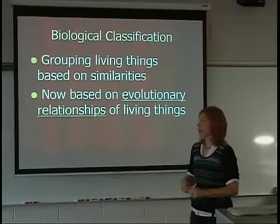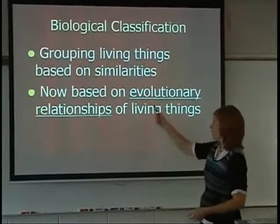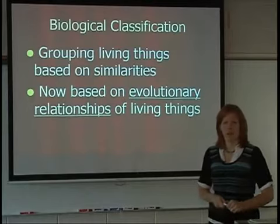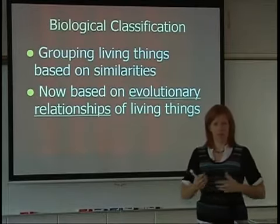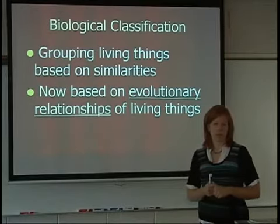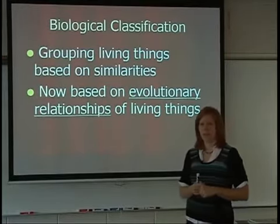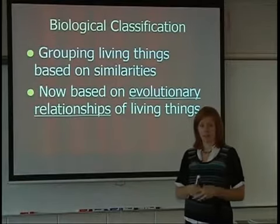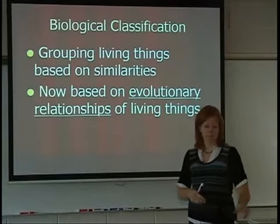The modern way that things are classified is based on their evolutionary relationships — how closely related they are over time. A lot of times they will look at an organism's DNA and analyze that to figure out how closely related the organisms are.